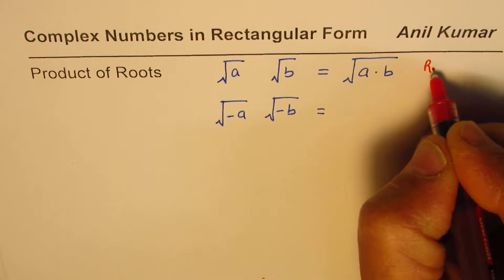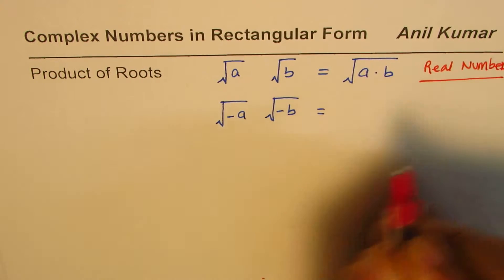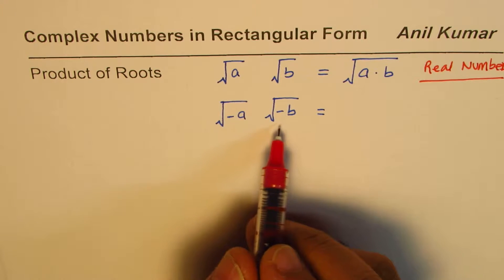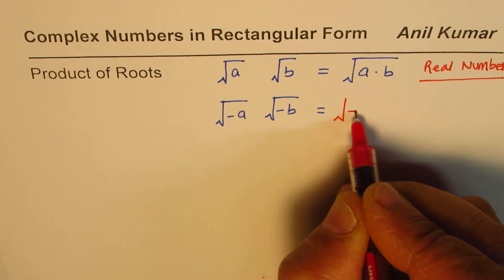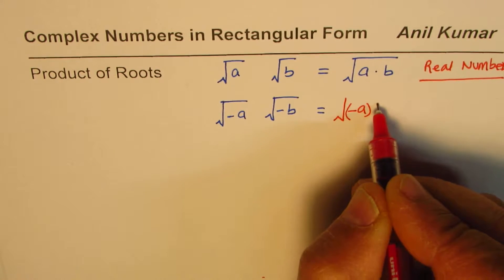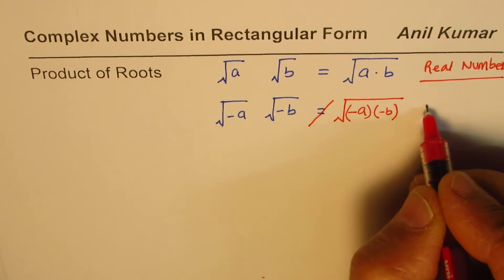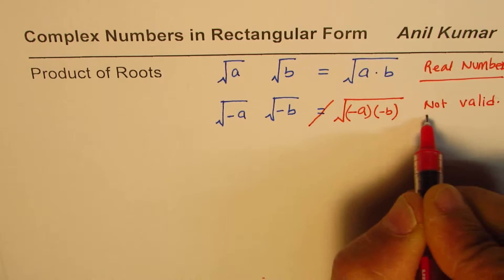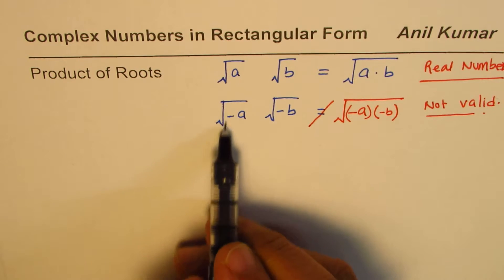However, when we have a negative within the square root, this equation is not valid. So if you write square root of minus a times square root of minus b as square root of minus a times minus b, that is incorrect — it is not valid. This is very important to understand.